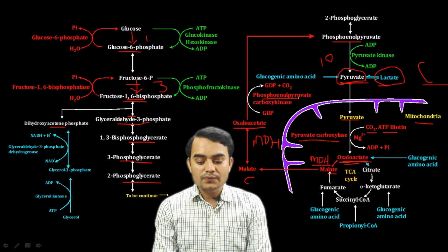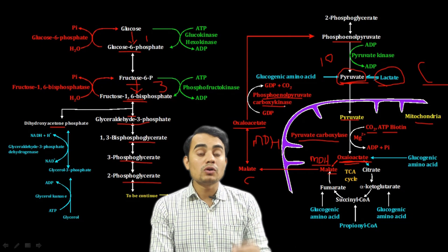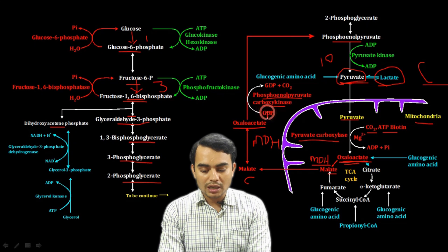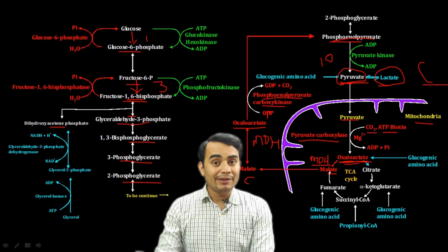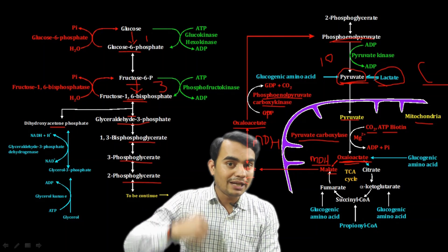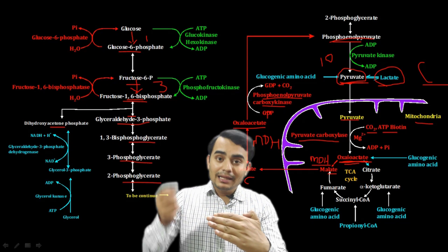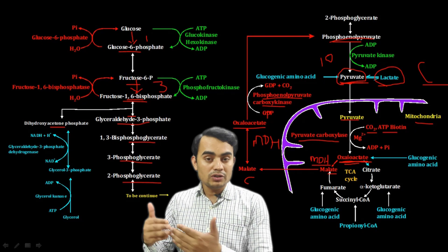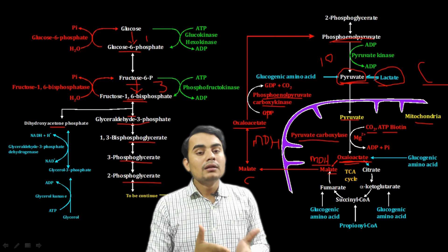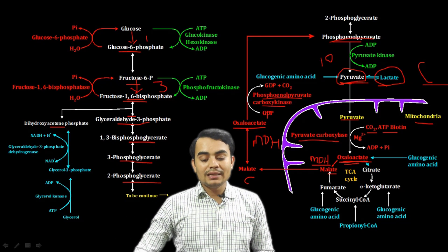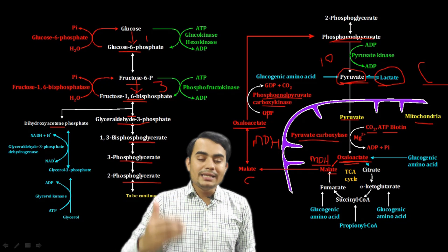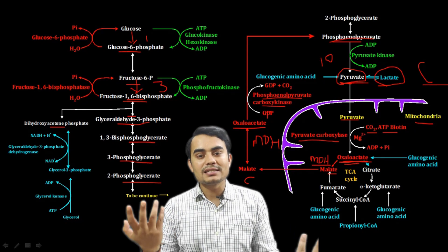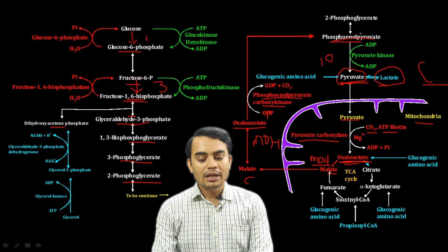Now in the cytosol, the enzyme phosphoenolpyruvate carboxykinase (PEPCK) acts on oxaloacetate and converts it into phosphoenolpyruvate (PEP). So the bypass for the irreversible tenth step is: pyruvate → oxaloacetate (mitochondria) → malate → cytosol → oxaloacetate → phosphoenolpyruvate via PEPCK.